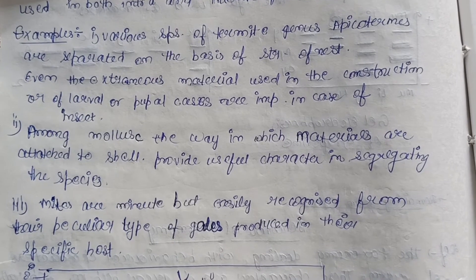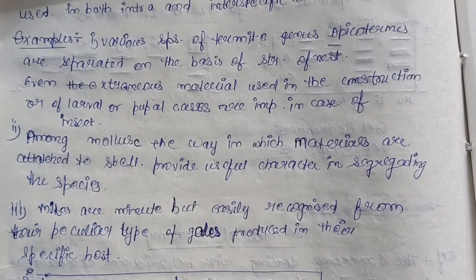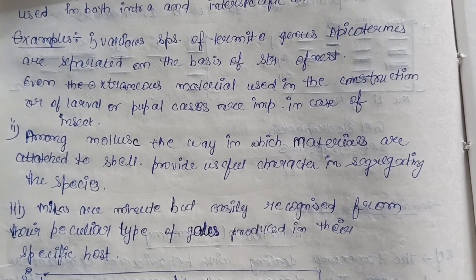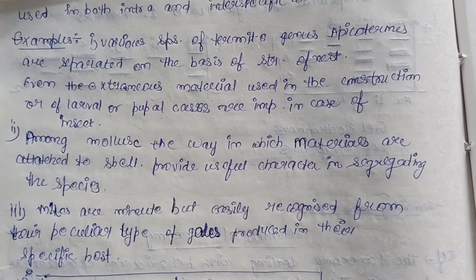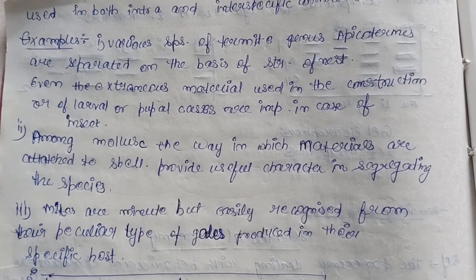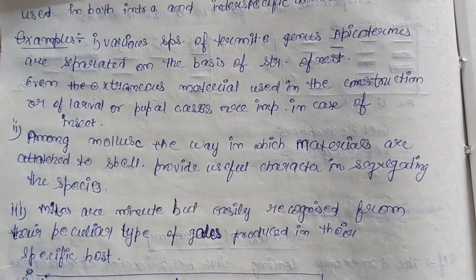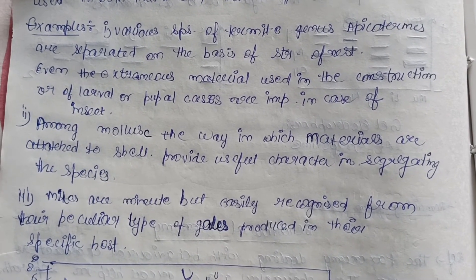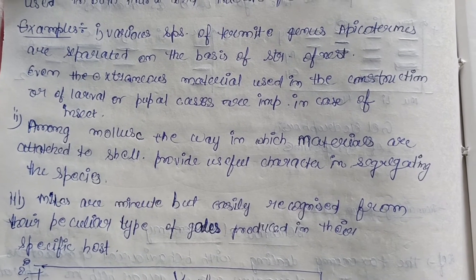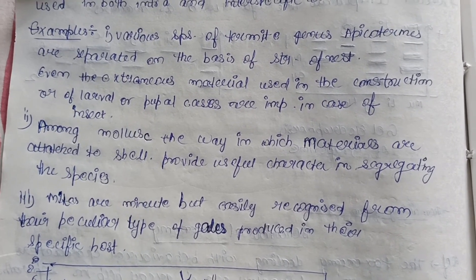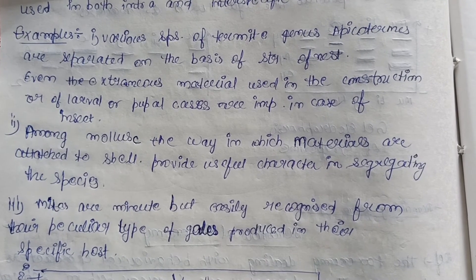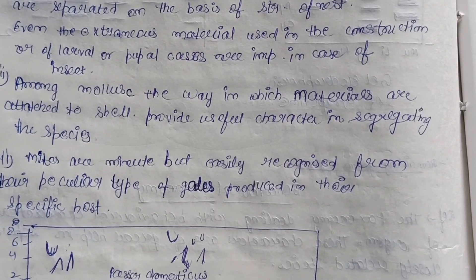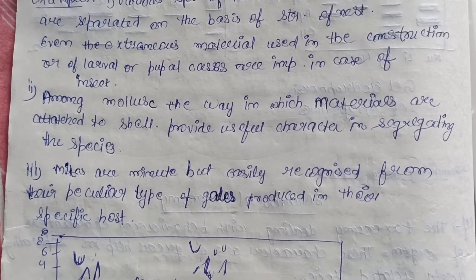Various species of termites of genus Apicotermes are separated on the basis of the structure of their nests — how many types of nests they build or what designs they make. Even the extraneous material used in the construction of larval or pupal cases is important for the identification and separation of insect species.